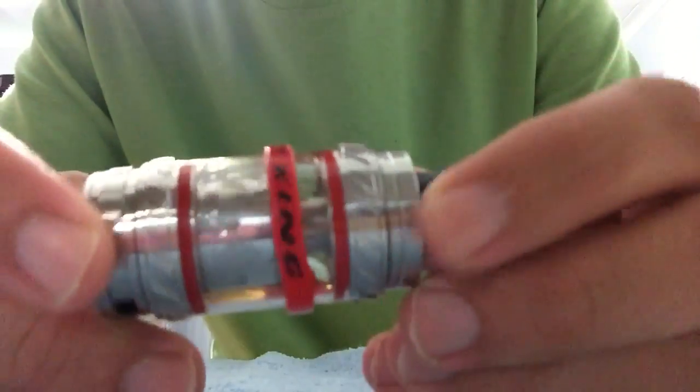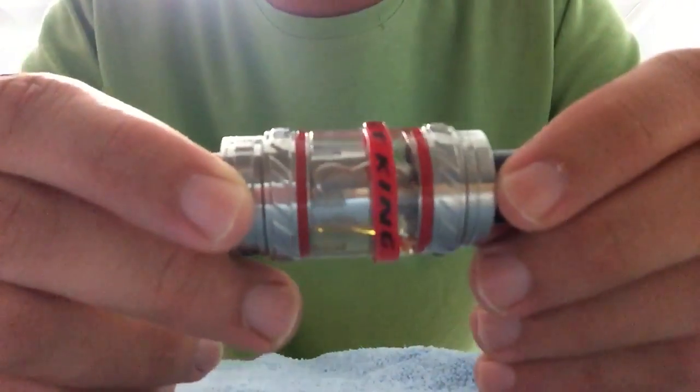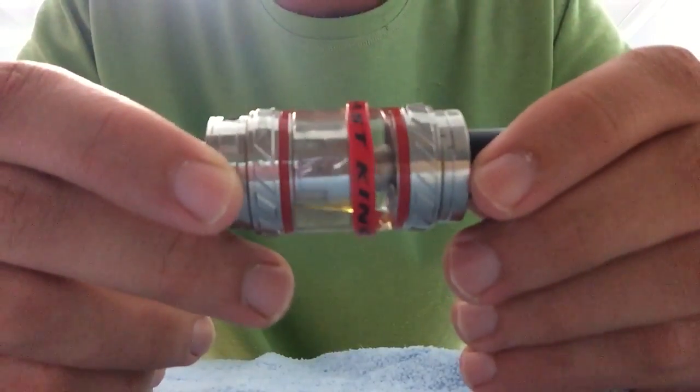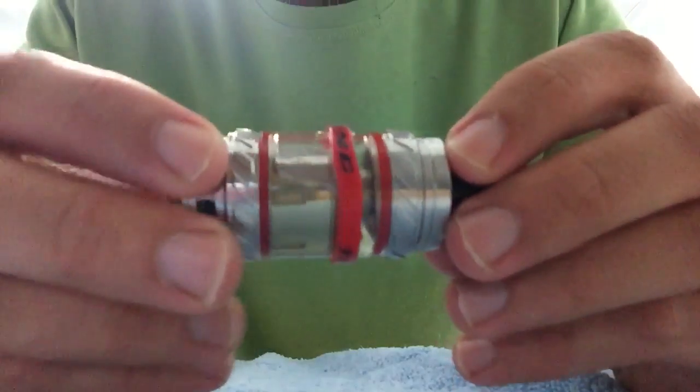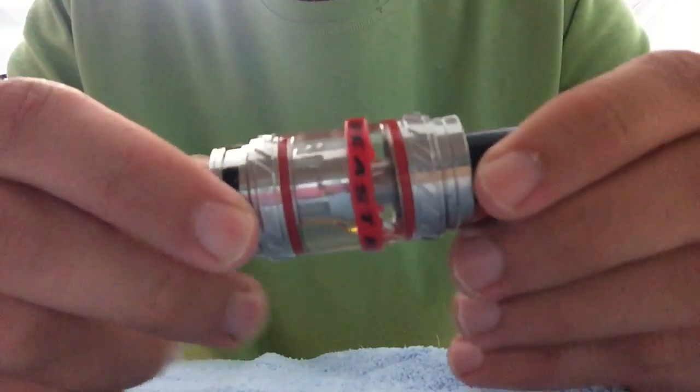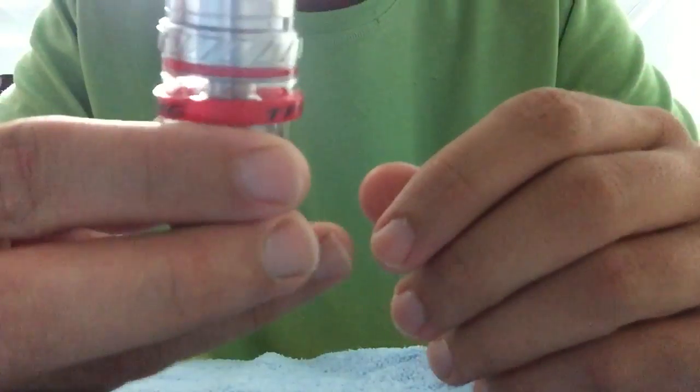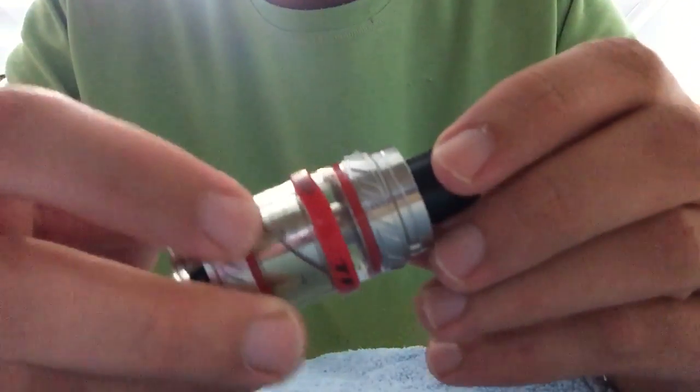What I want to do is tell you how to fix the leaking issue on the TFB12 Cloudbeast King. When you get them with the pre-installed coil and everything, sometimes you have a leaking issue.